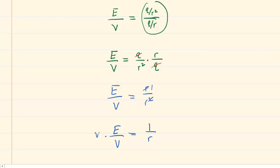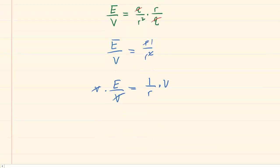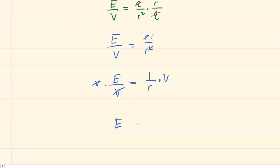Finally, multiply both sides of this equation by the electric potential V which cancels on the left side. We can see now that the electric field is simply the electric potential divided by the radius of the sphere.